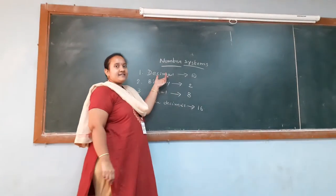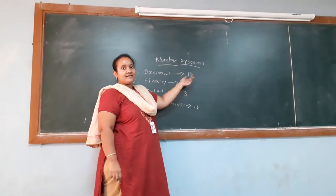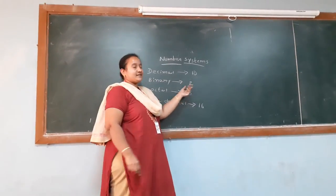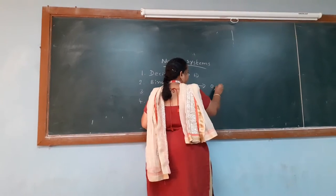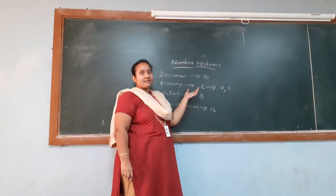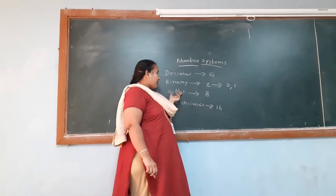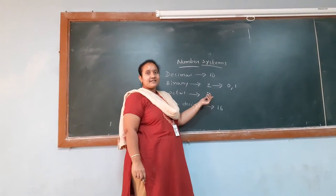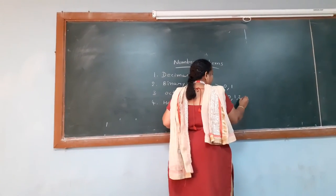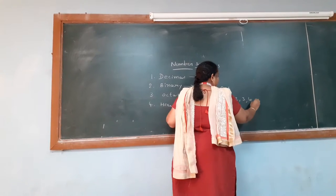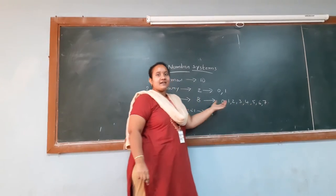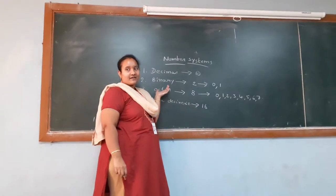Each number can be represented using 10 digits in decimal. For binary, we have only 2 digits — 0 or 1. By using 0 and 1 only, we can represent any number in the binary number system. In octal, the base is 8, so there are 8 digits: 0, 1, 2, 3, 4, 5, 6, and 7. By using these 8 digits, we can represent any number in octal format.